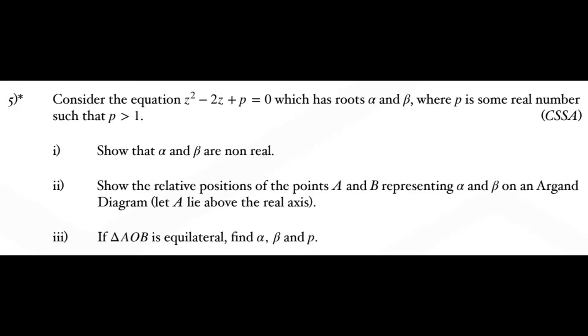For this question, we're given the equation z squared minus 2z plus p equals 0. We're told the roots are alpha and beta, and we're told that p is some real number where p is greater than 1. So the question has three parts. We've got to show that alpha and beta are not real. We want to show the relative positions of the points A and B, which each represent alpha and beta on an Argand diagram. And then if we're told that the triangle AOB is equilateral, we need to use that to find alpha, beta, and p.